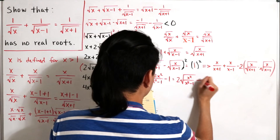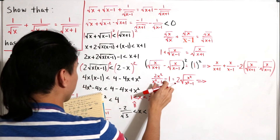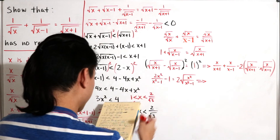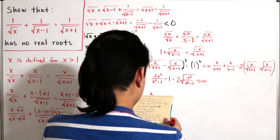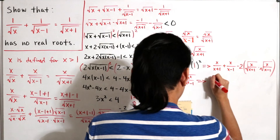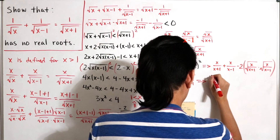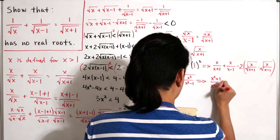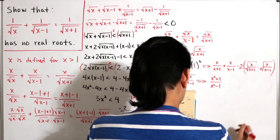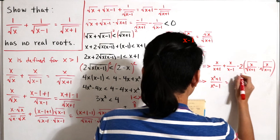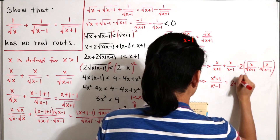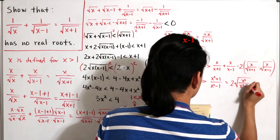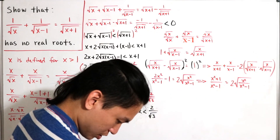Subtracting 1 and moving the square root product term to the other side, we simplify to get (x squared plus 1) divided by (x squared minus 1) equals 2 times the square root of x squared divided by (x squared minus 1).